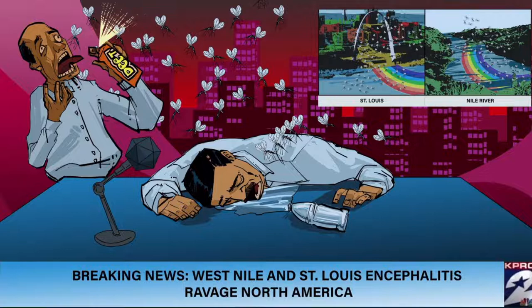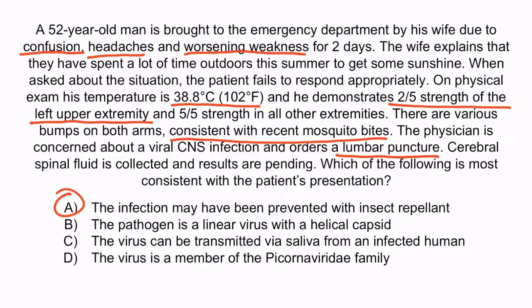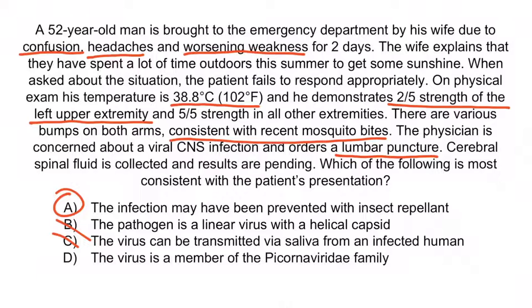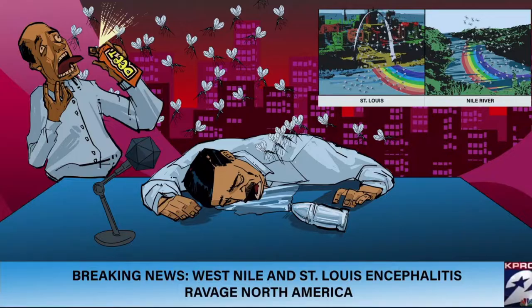Choice B is incorrect because the pathogen is a linear virus with an icosahedral capsid, not a helical capsid — remember the icosahedral microphone. Choice C is wrong because these viruses are transmitted through infectious mosquitoes, not from human saliva. Finally, choice D is wrong because West Nile and St. Louis encephalitis are of the flavivirus family, not the picornavirus family — remember that bad flavor the man was gagging on. And with that, you've learned all you need to know for West Nile and St. Louis encephalitis.